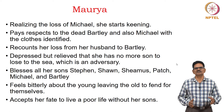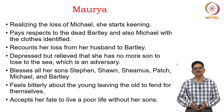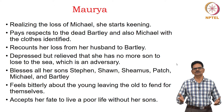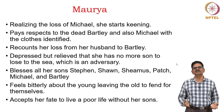She is depressed, but relieved that she has no more sons to lose to the sea, which is the antagonist in the play. Maurya blesses all her sons — Stephen, Sean, Shimas, Patch, Michael and Bartley — during the funeral ritual for Bartley. She feels bitterly about the young leaving the old to fend for themselves, and accepts her fate to live a poor life without her sons.